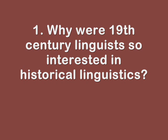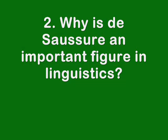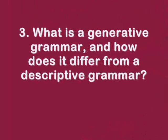Question number one: Why were 19th century linguists so interested in historical linguistics? Number two: Why is de Saussure an important figure in linguistics — why is he so important? And the last one: What is a generative grammar, and how does it differ from a descriptive grammar? Get into pairs or trios, discuss these questions, and then write the answers down.